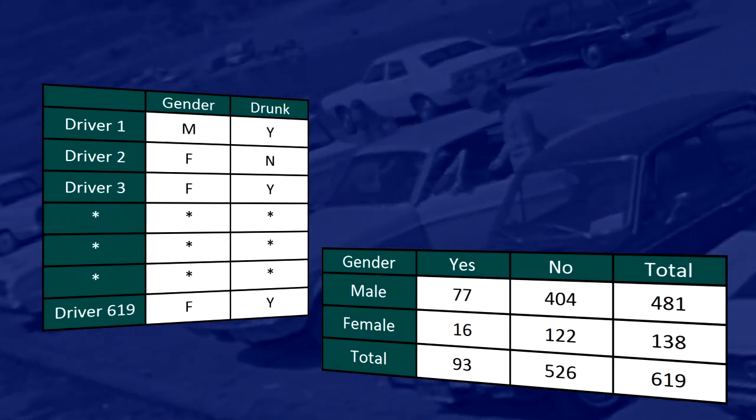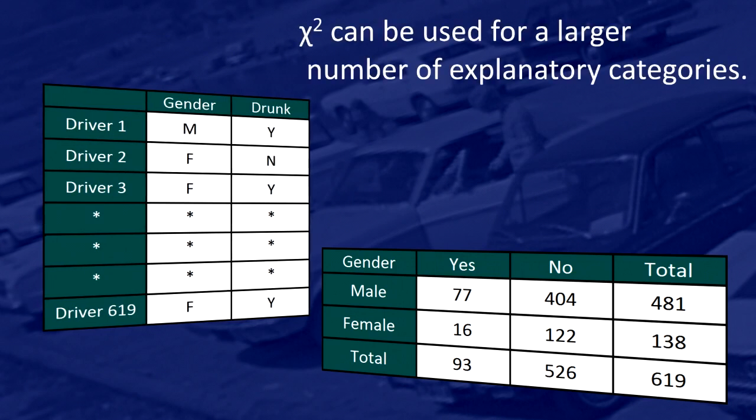The chi-square procedure is not limited to two-by-two situations. It can also be used for a larger number of explanatory categories.